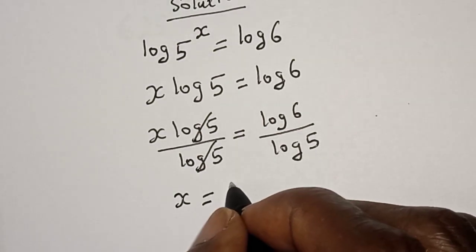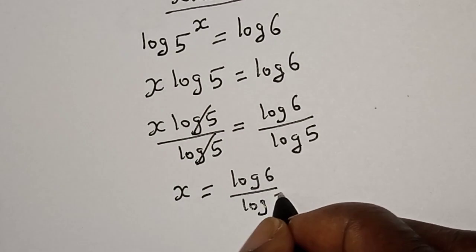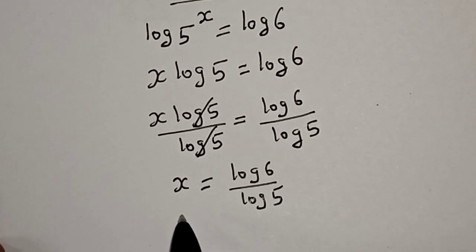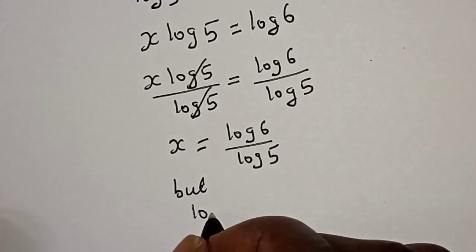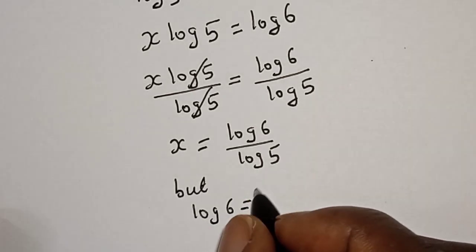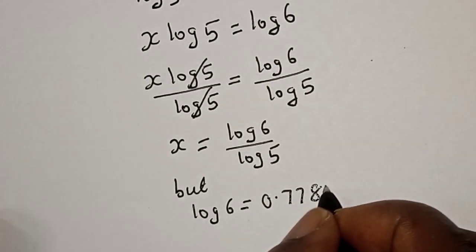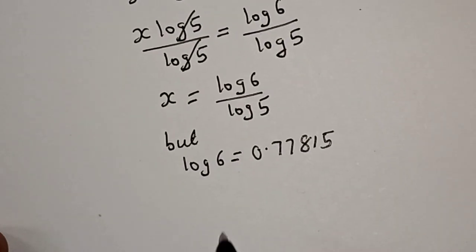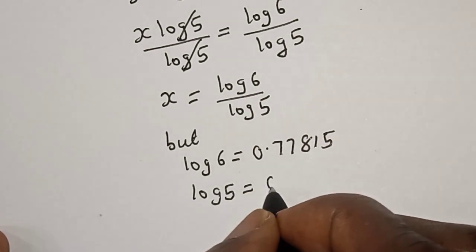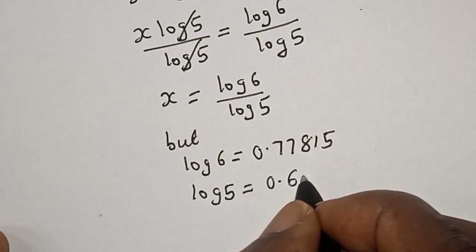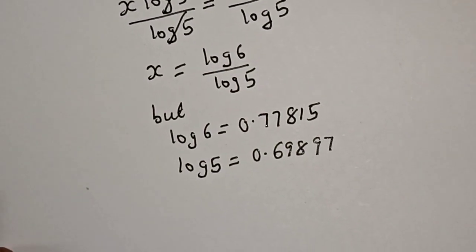s is equal to log 6 over log 5. But log 6 is equal to 0.77815 and log 5 is equal to 0.69897.